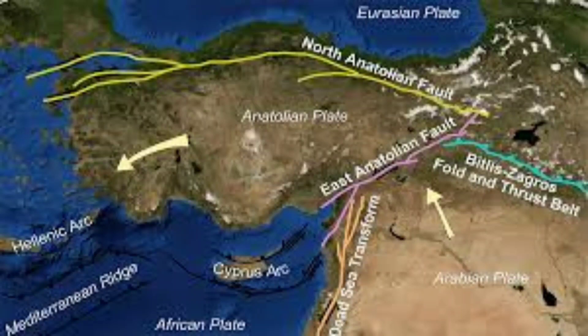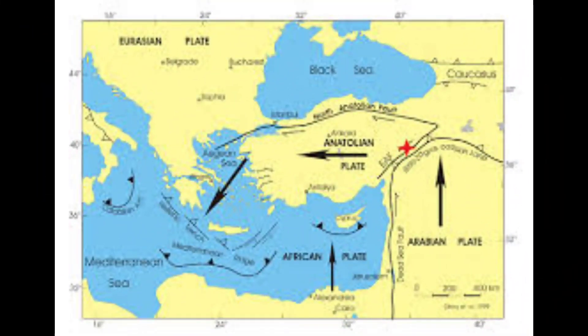Turkey is located on the Anatolian Plateau, and the tectonic plate on which it sits is known as the Anatolian plate. This plate is surrounded by the African plate, Arabian plate, and Eurasian plate. The Arabian and African plates tend to move northward, but the Eurasian plate hinders this movement, squeezing the Anatolian plate. Additionally, the oceanic plates of the African plate move toward the Anatolian plate, and due to their higher density, subduct beneath it, causing the Anatolian plate to be displaced.